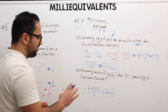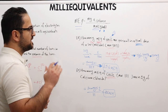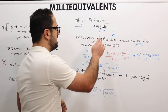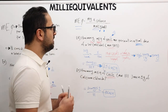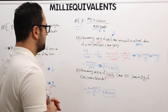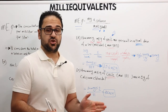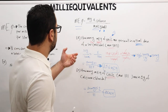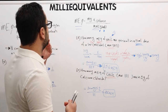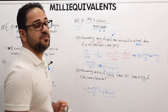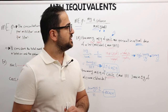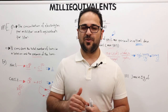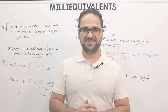Therefore, it's always important to know and be able to calculate the valence number for any compound you encounter in a question — whether in class, on an exam, or in practice — in order to dispense the correct amount of electrolyte per patient. That's it for this video. If you have any questions, please leave them in the comments below, and as always, thank you for watching.